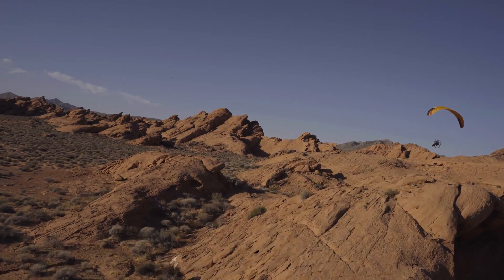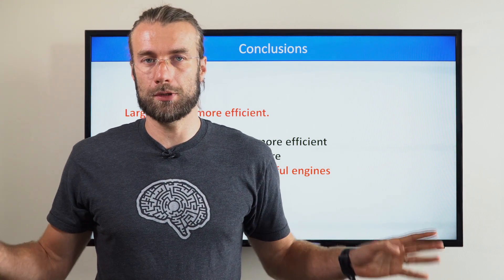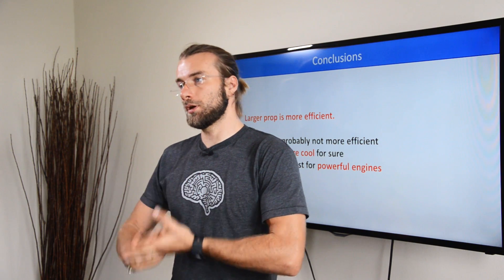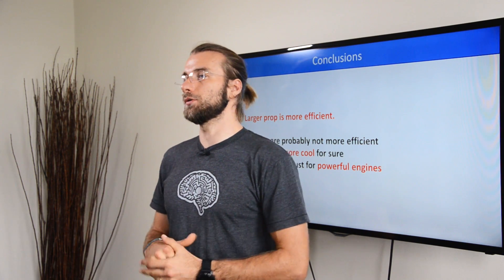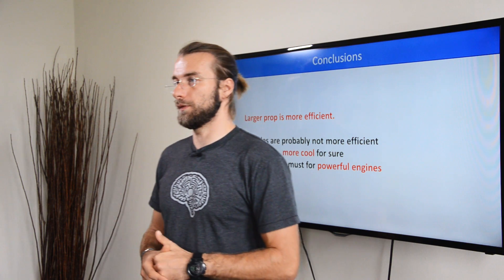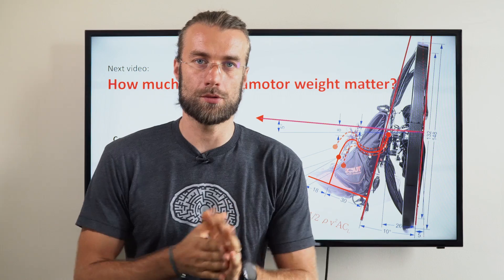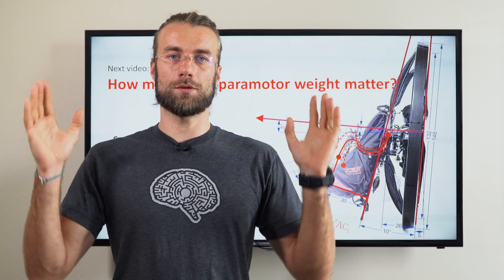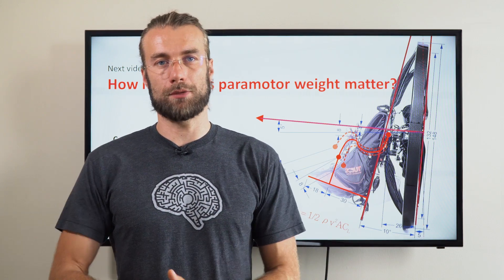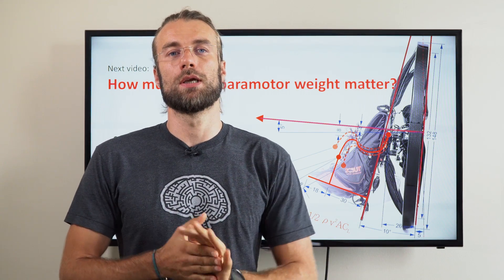Conclusions: larger prop is definitely more efficient. This is proven by theory and is proven by real life experience. Three blades are probably not more efficient, but they are definitely cool in sound and vibration. And three blades or four blades are a must for very powerful engines. So this was part 29 of the insights into paramotor geometry. The next topic is really cool. I'm going to discuss how much does the weight of the paramotor matter for your flying experience. Thanks for watching. Please hit the subscribe button if you haven't done so yet. And see you soon.